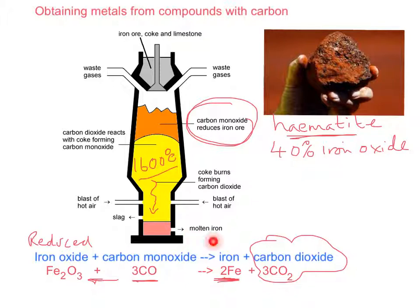Molten iron comes out of the bottom because it's the densest material. And the hot air must be mentioned because that's the thing that sets up the temperature inside the furnace and gets the reaction going.